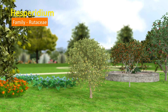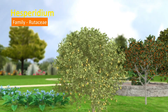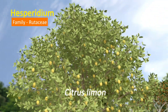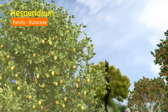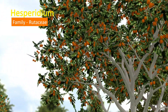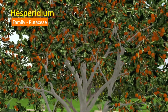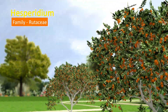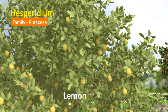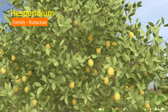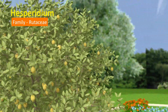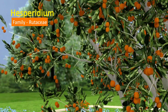Hesperidium is the characteristic fruit of the family Rutaceae. Citrus limon and Citrus sinensis are members of Rutaceae. Citrus limon is the botanical name of lemon, and Citrus sinensis is the botanical name of sweet orange.